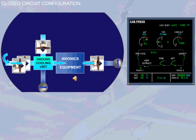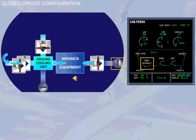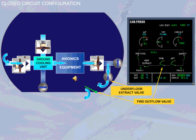On the ground with all engines running, or on a 340-600 with engines 2 and 3 running, or in flight, the ground cooling unit and the fan are stopped. The ground cooling valve is closed. In addition, the overboard extract valve is closed, and the air from the avionics equipment is blown through the underfloor extract valve, under the forward cargo compartment, then overboard through the forward outflow valve.